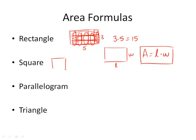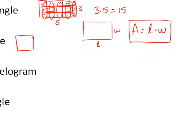Square is exactly the same, except the length and width are the same. So if the side is S and the other side is S, it's exactly the same as the rectangle, except it's S times S, which gives us S squared.